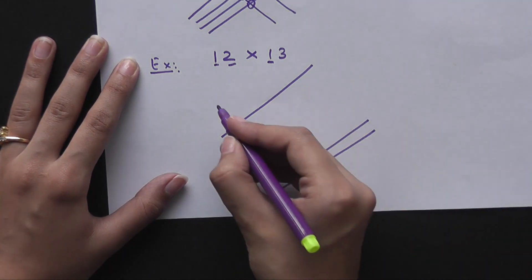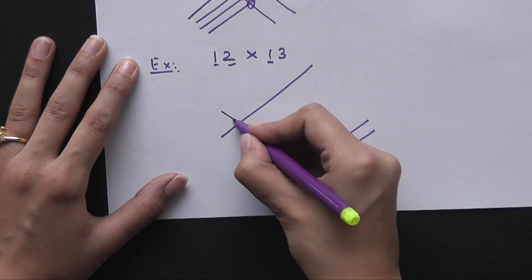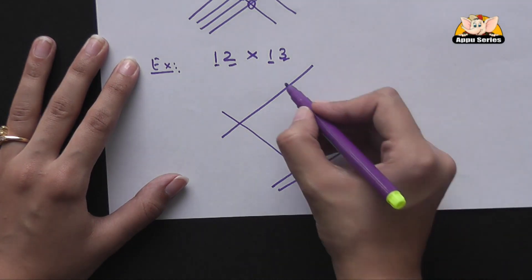Now this 1, we will draw it here. And this 3, we will draw it this way.